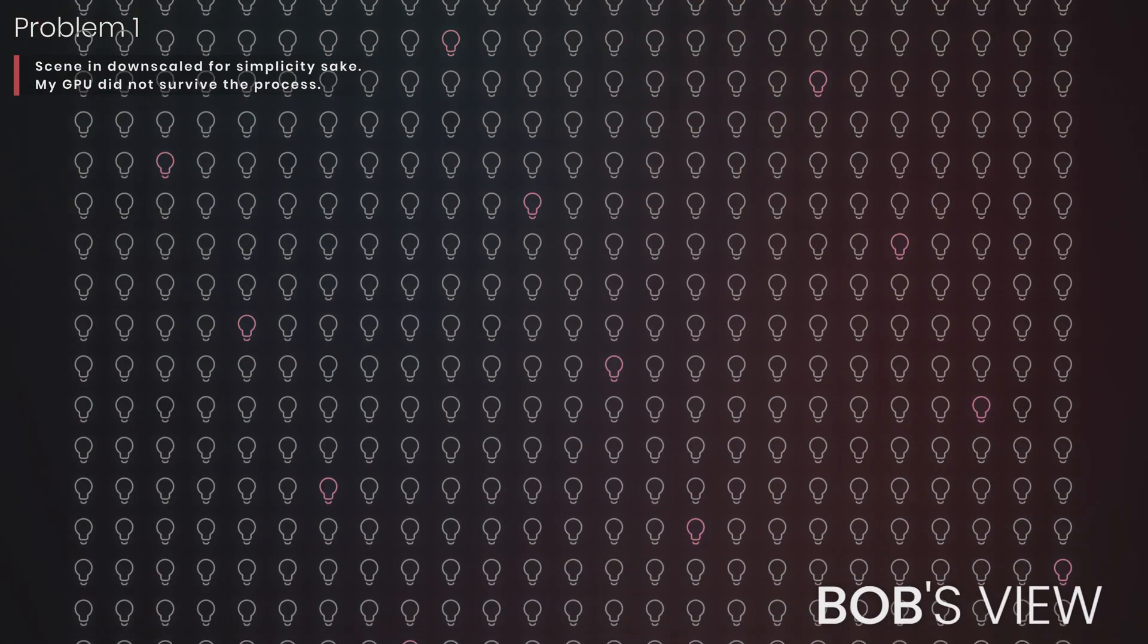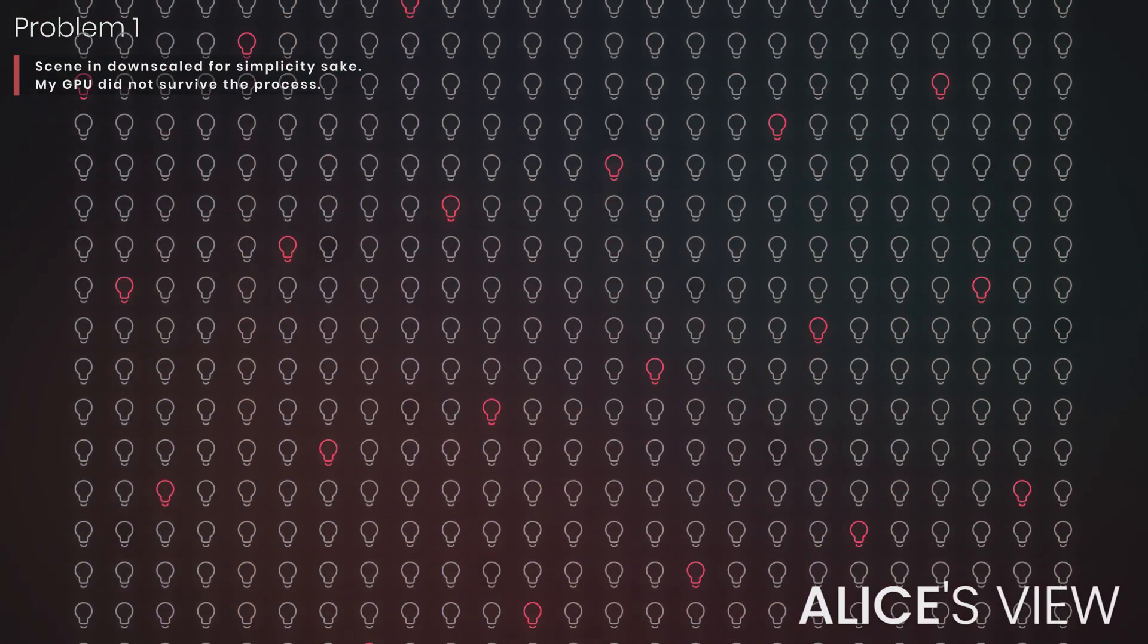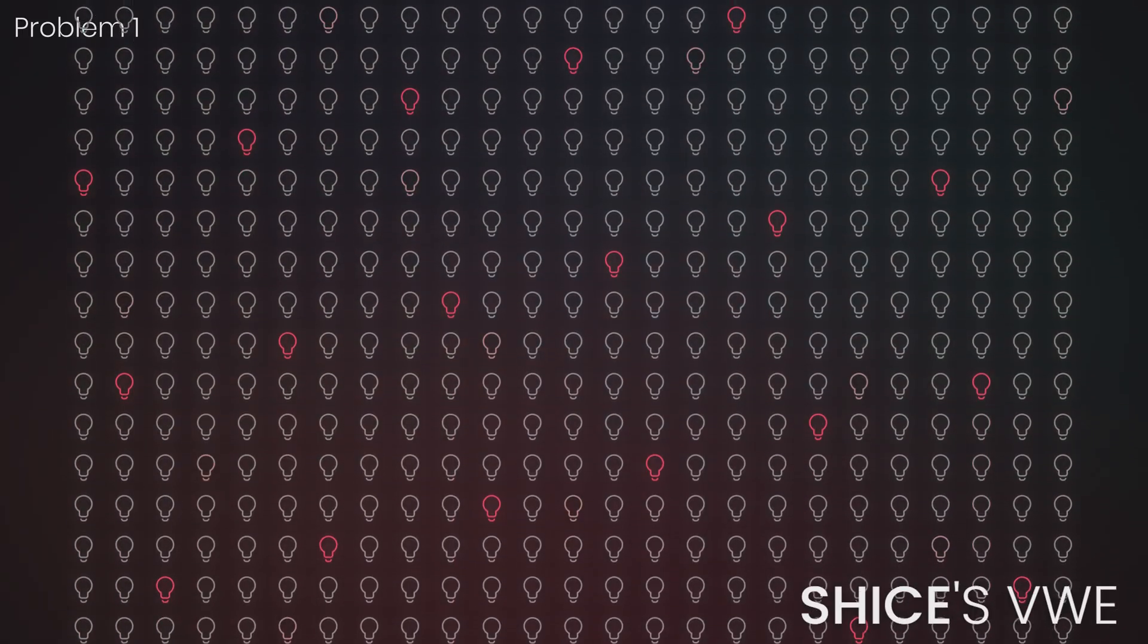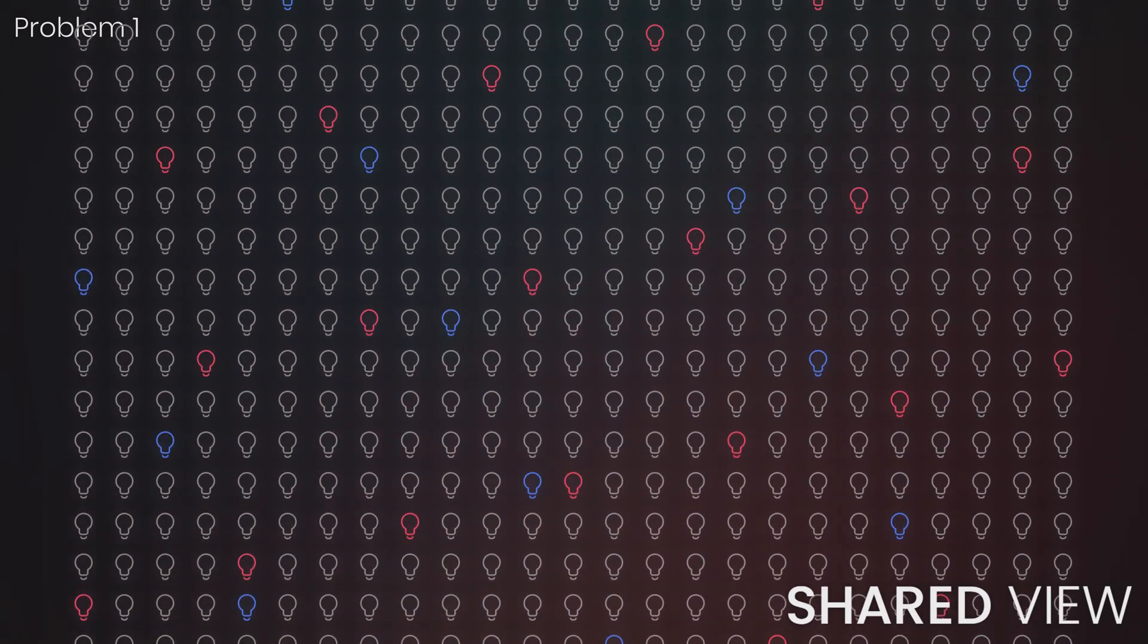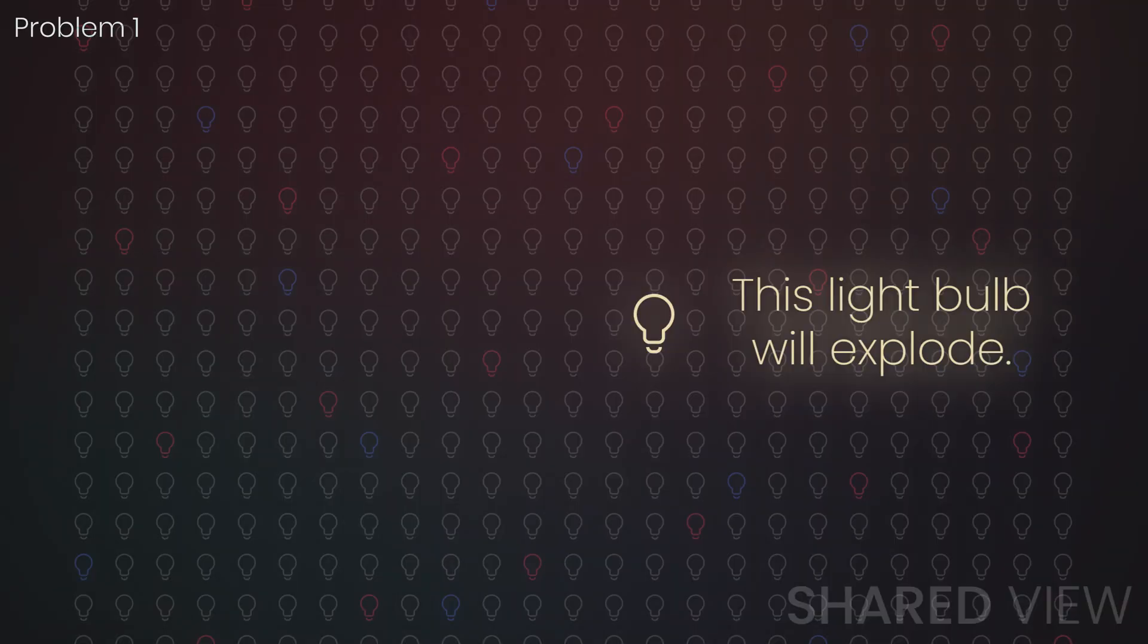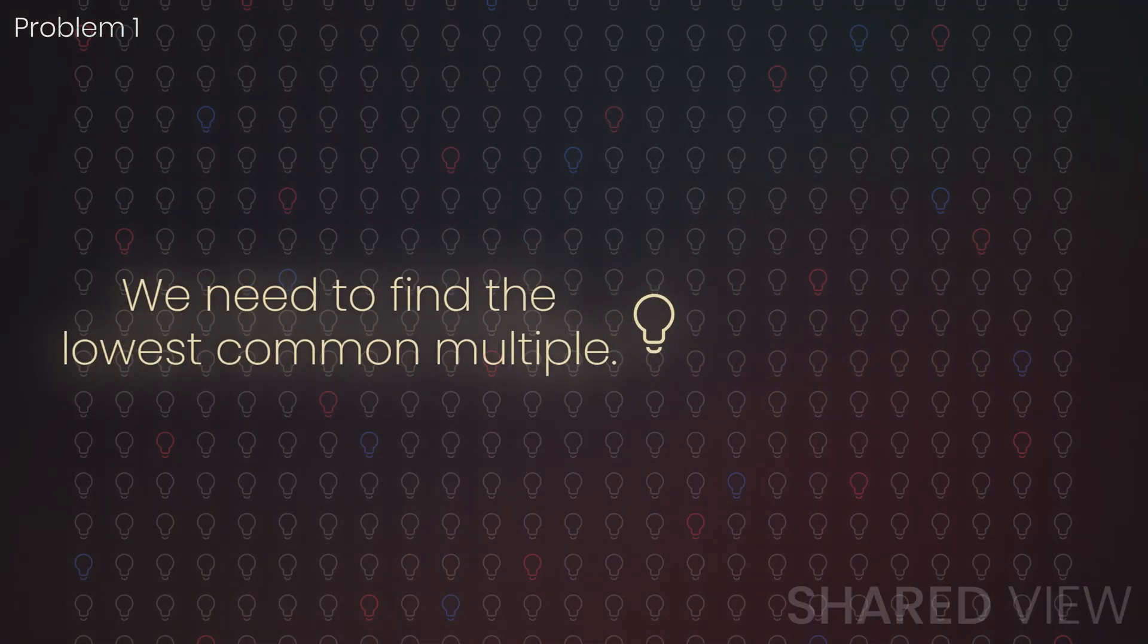When a person is said to flip every nth switch, only switches that are multiples of n are affected. For a switch to be flipped by both Alice and Bob, there must be a multiple of 42 and 69. Basically, we need to find the lowest common multiple of these numbers.